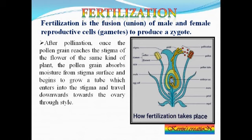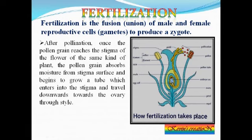After pollination, the pollen grains are transferred from the anther to the stigma. Once the pollen grain reaches the stigma — the upper part of the female reproductive part — these pollen grains absorb moisture from the stigma surface and begin to grow a tube. You can see the yellow tubes entering into the stigma and traveling downwards towards the ovary through the style.